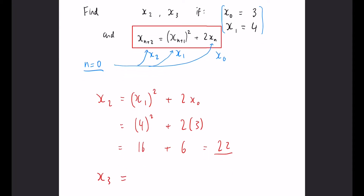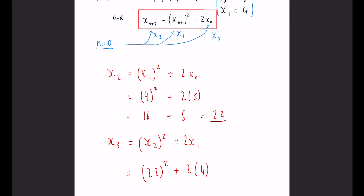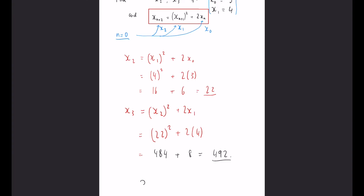Now we also need to work out x_3. Pause the video if you want and give it a go for yourself first. It's going to be a very similar concept. This time our x_{n+1} is going to be x_2 and our x_n is going to be x_1, so we multiply that by 2. We need to use our x_2 that we just worked out, 22, and our x_1 is the 4 that they gave us in the question. So 2 multiplied by 4 is 8, and our final answer for that one is going to be 492. So all in all the sequence we've produced is 3, 4, 22, 492.